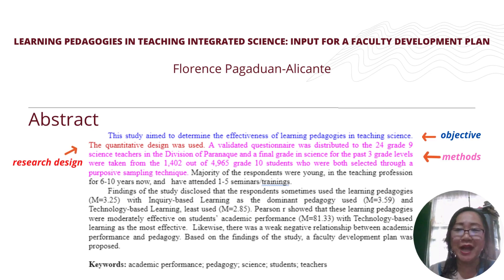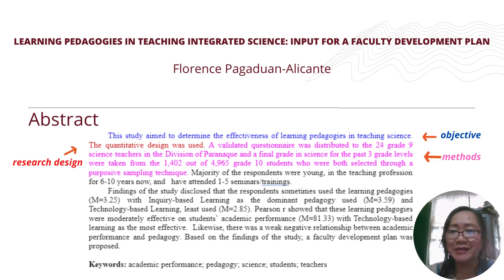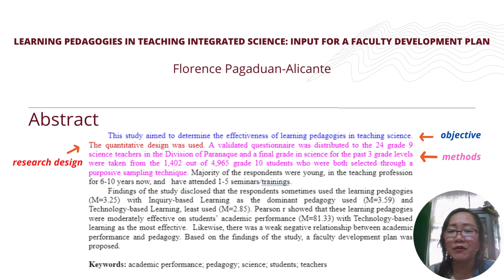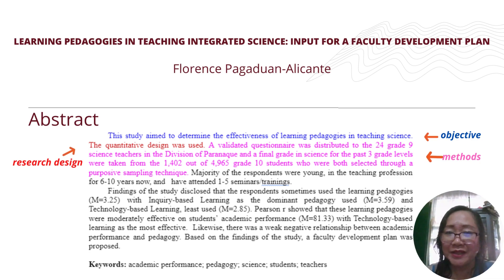Aside from the objective and research design, methods should also be included in your abstract. Methods refers to the techniques in collecting data. Common methods include surveys, experiments, interviews, and observations. You may also describe the sample and the sampling technique. In our example, the methods state: 'A validated questionnaire was distributed to the 24 Grade 9 science teachers in the Division of Parañaque, and final grades in science for the past three grade levels were taken from 1,402 out of 4,965 Grade 10 students, both selected using a purposive sampling technique.'